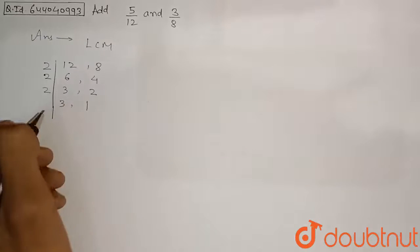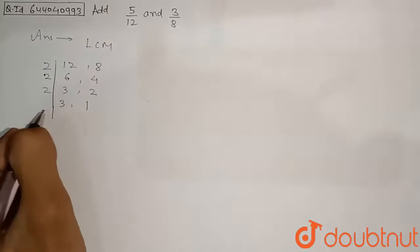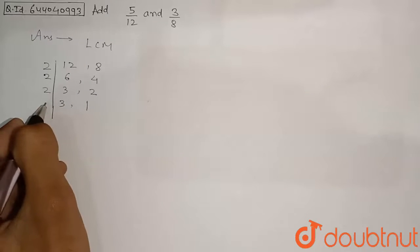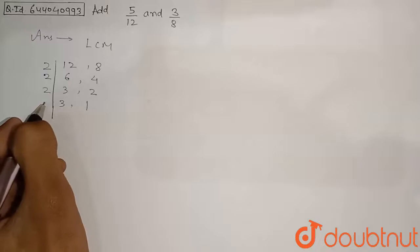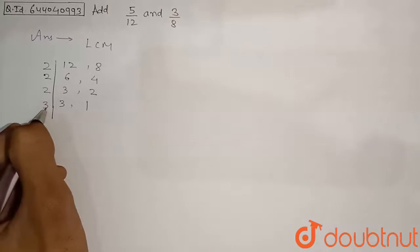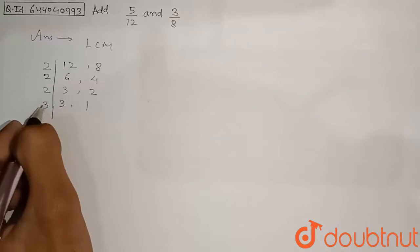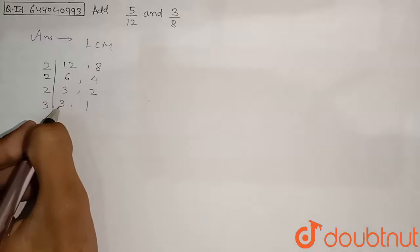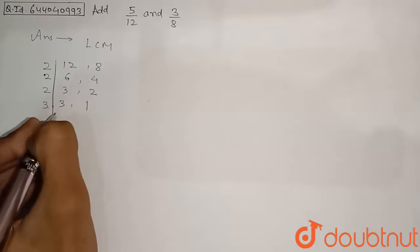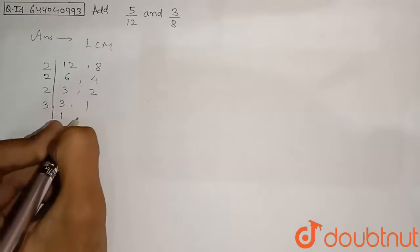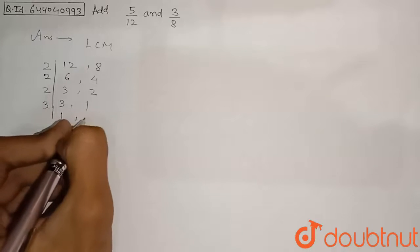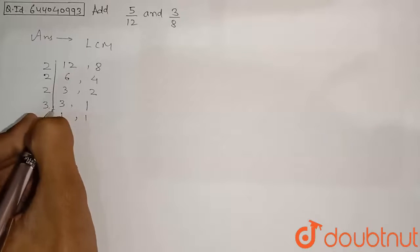Now we consider the remaining 3. We take 3 as the next divisor. 3 divided by 3 gives 1, and 1 remains 1. So both numbers reduce to 1.